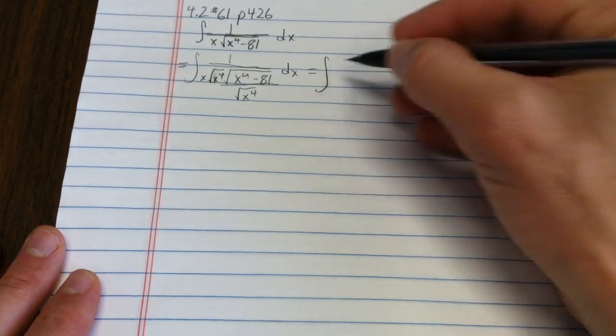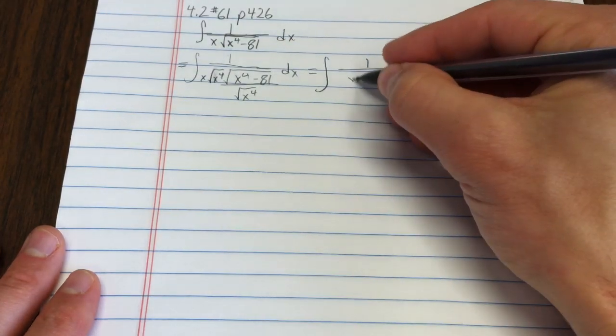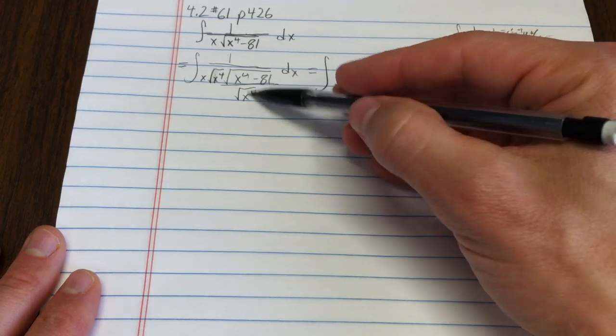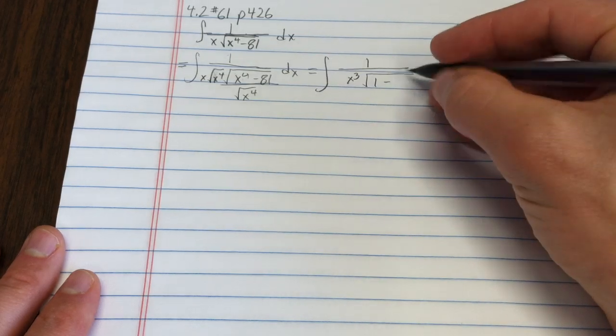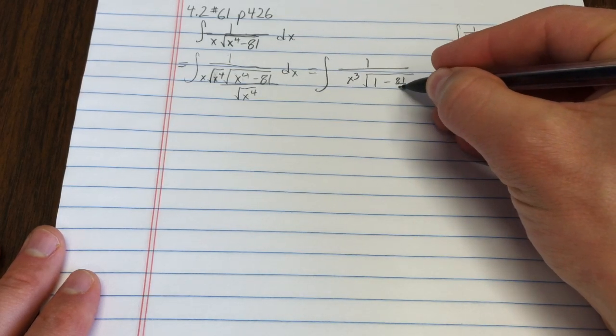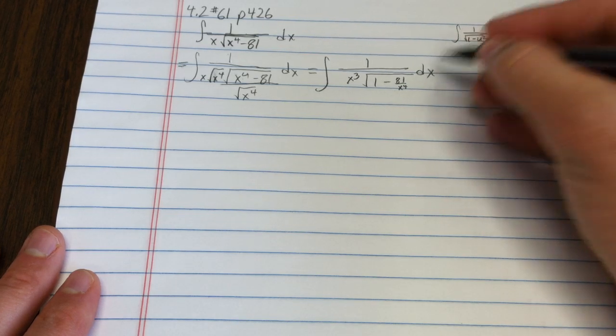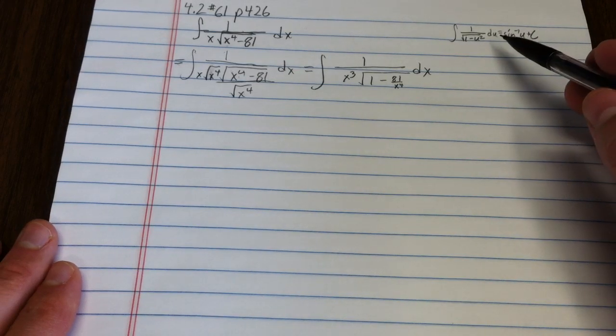So algebraically, what do I have here? I have 1 over the square root of x to the fourth is x to the third. And here, that's 1. Here I have minus 81 over x to the fourth dx. So I'm getting fairly close to be able to work with this.